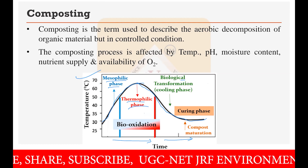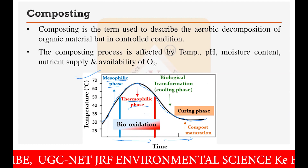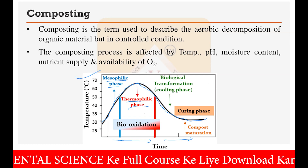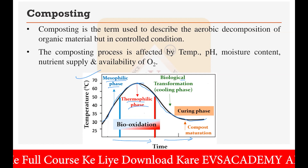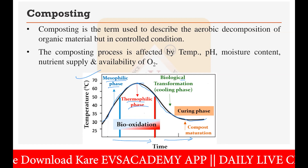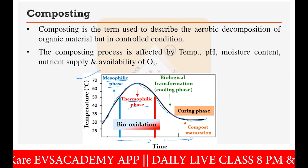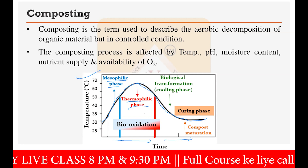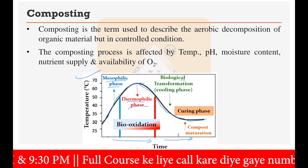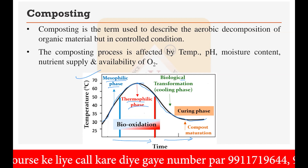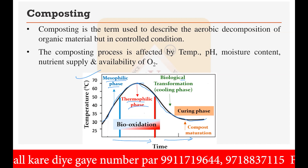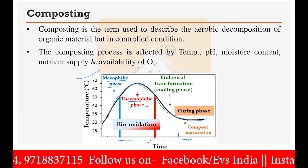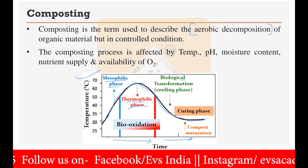If you have a composting pile, the best way to check whether composting has started is to insert a piece of wood into the composting heap, take it out, and touch it to sense whether the temperature is high. If the temperature is high it means composting has already started. You can also use a thermometer to check the temperature directly. The rising temperature is due to the aerobic decomposition taking place.